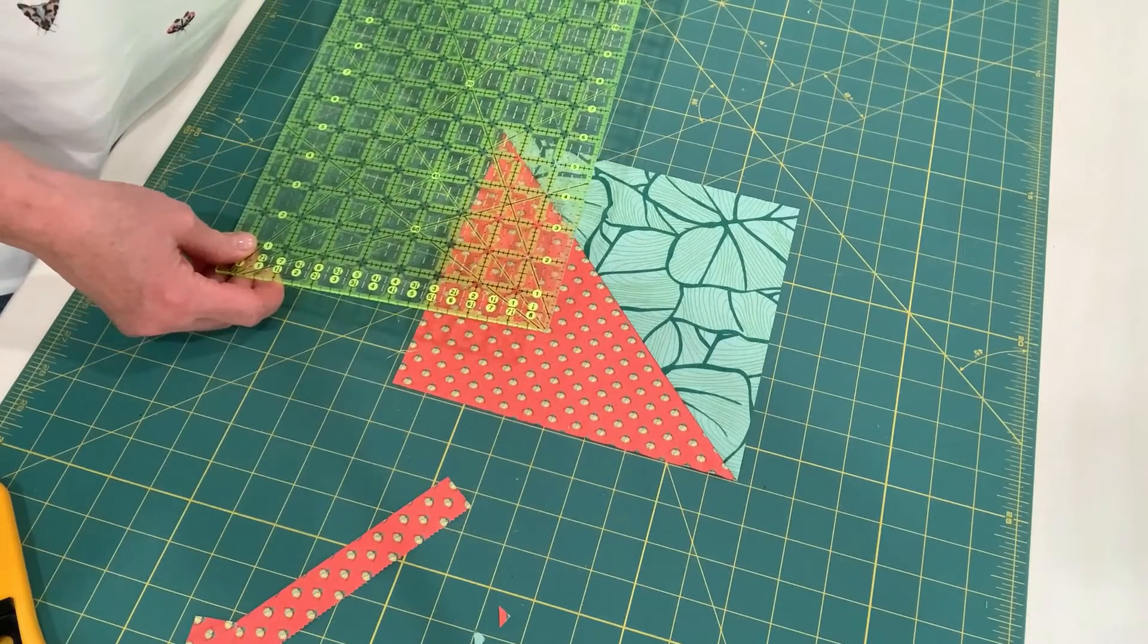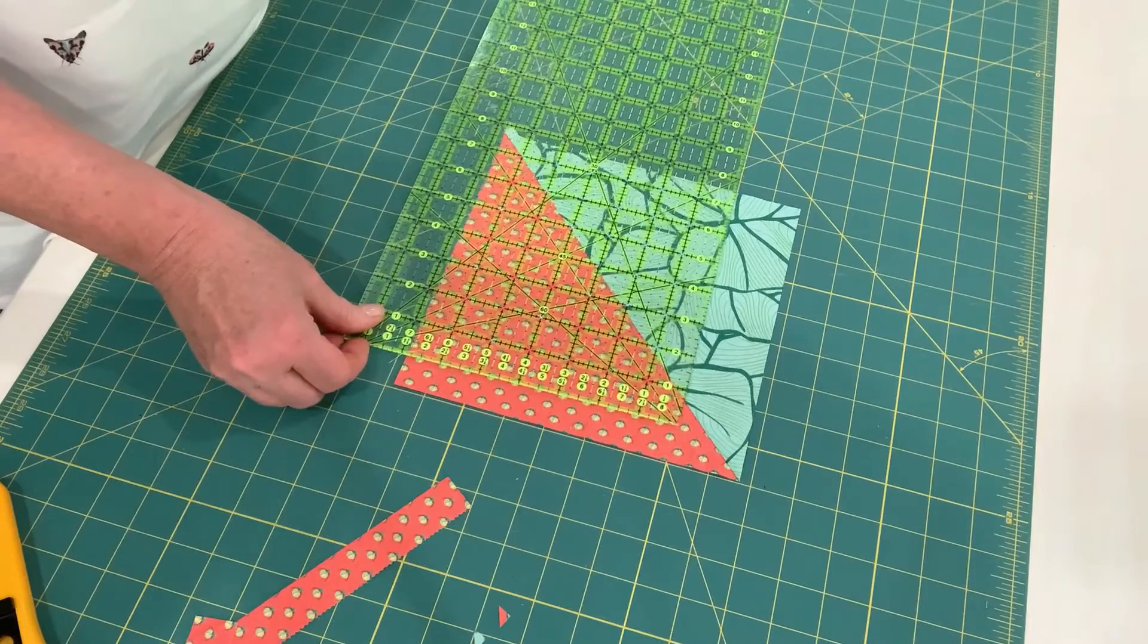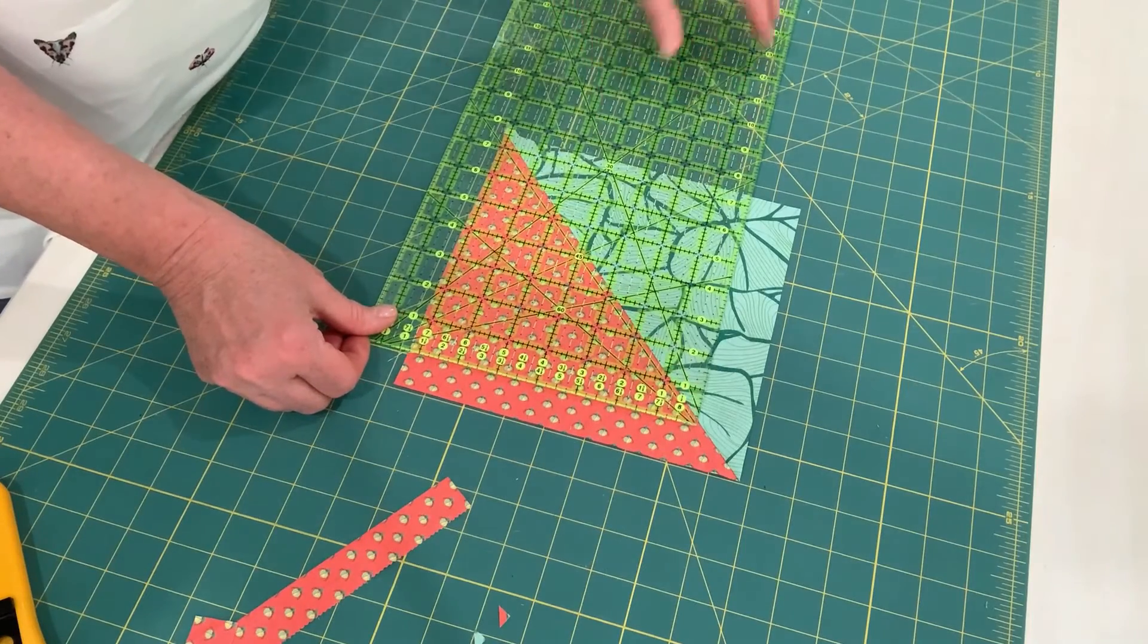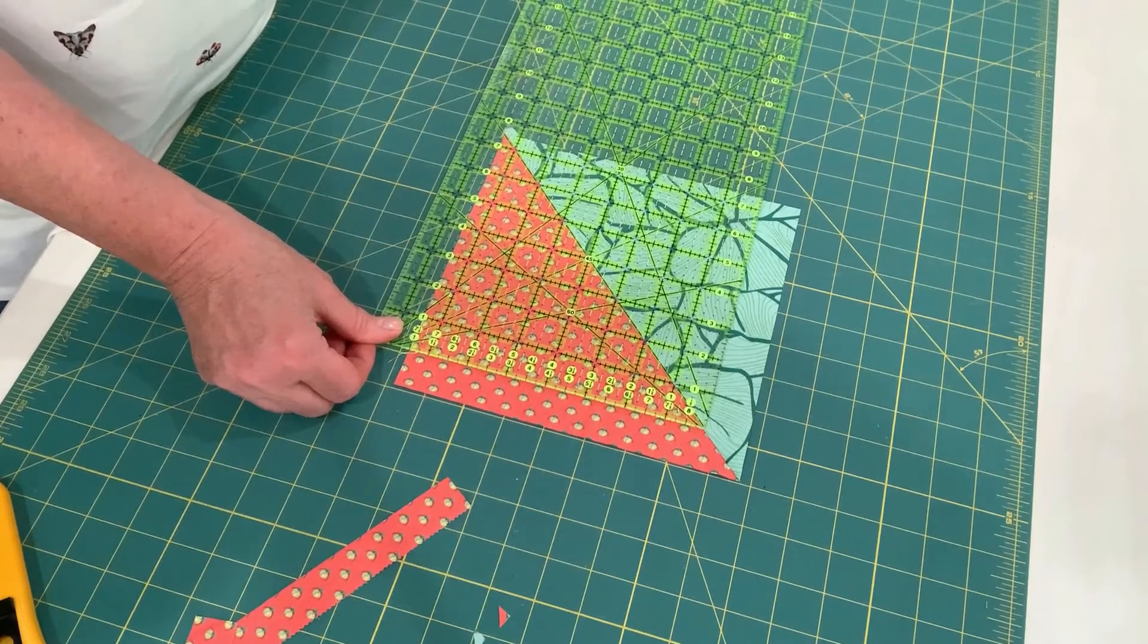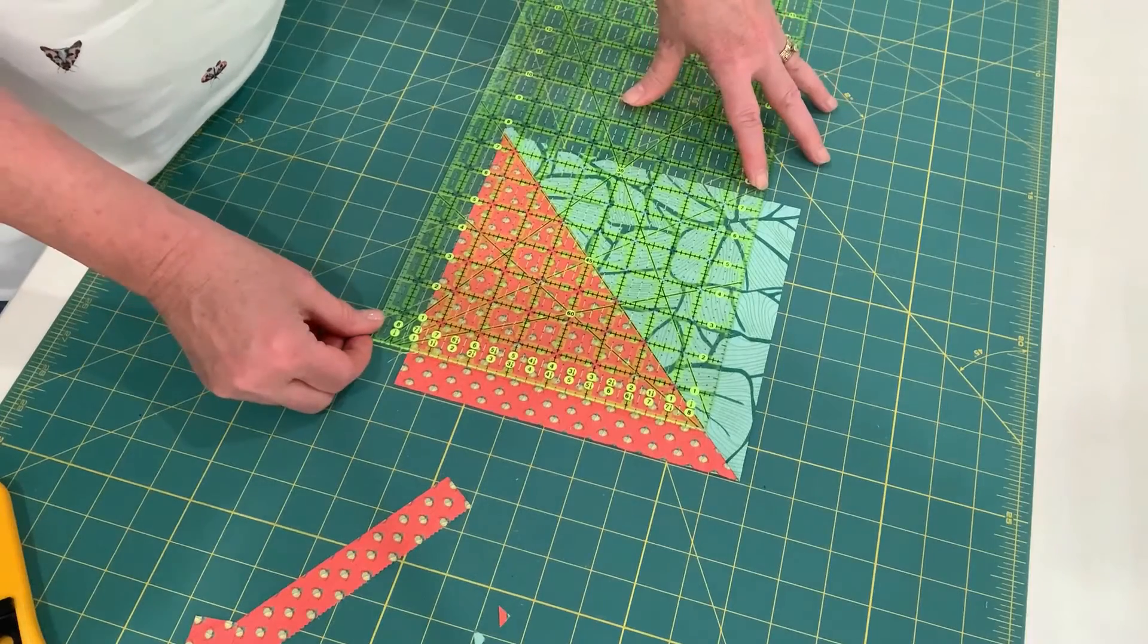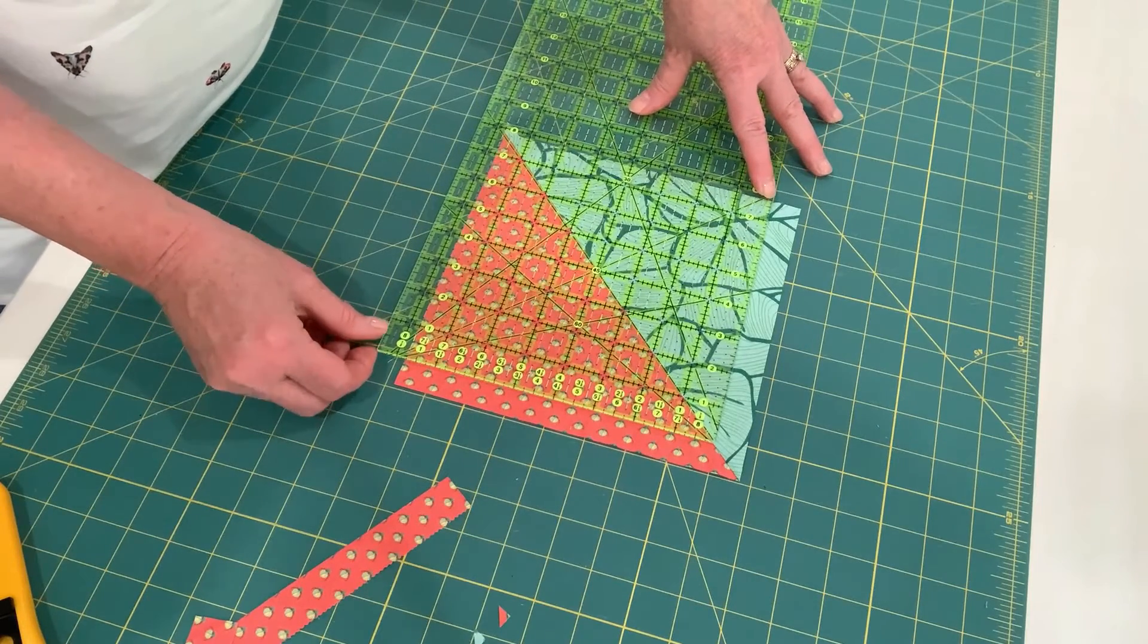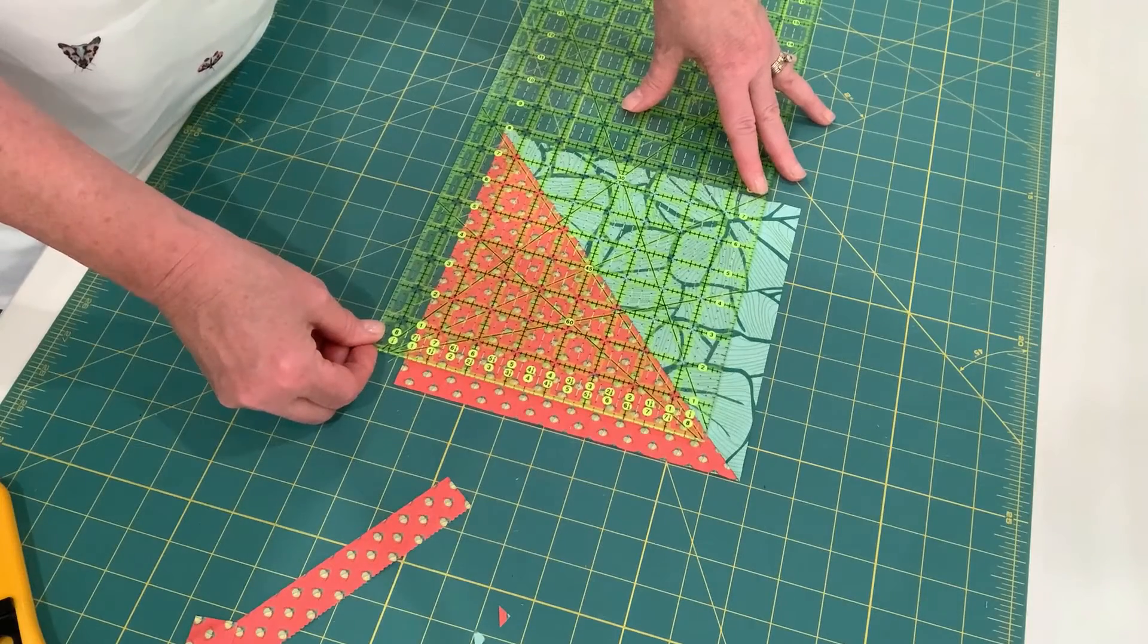If I want to trim this down to 7 1⁄2 inches, I line up the 7 1⁄2 inch measurement. First of all, line up the 45 degree angle, then put the 7 1⁄2 measurement there, and then on here as well.